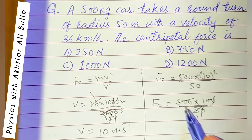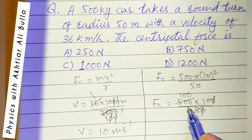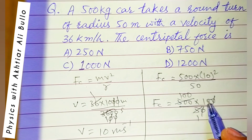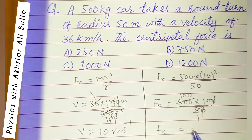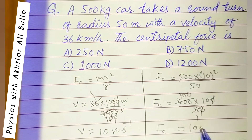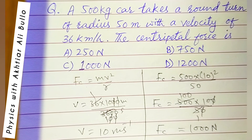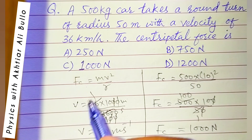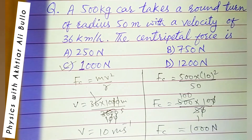So 500 divided by 50 gives 10, and 10 multiplied by 100 gives 1000 Newton. So the correct option is C: 1000 Newton.